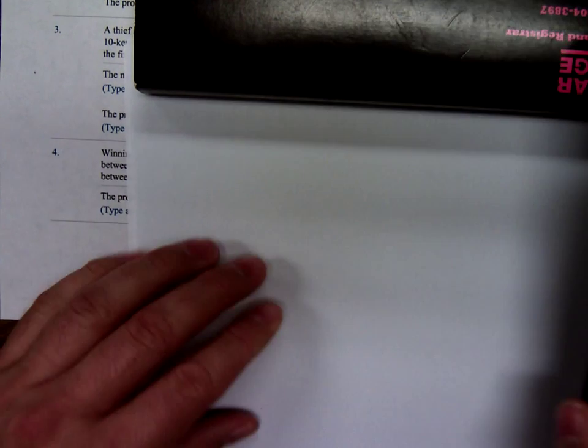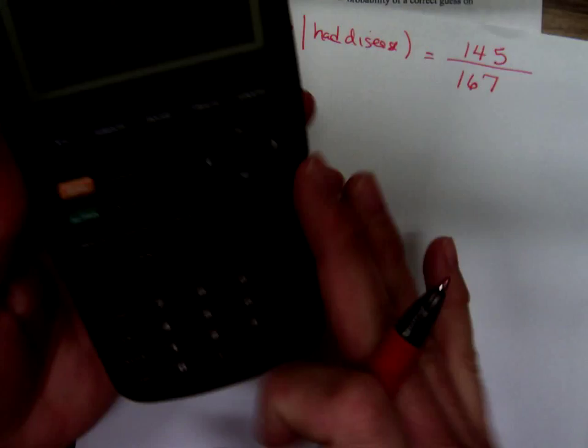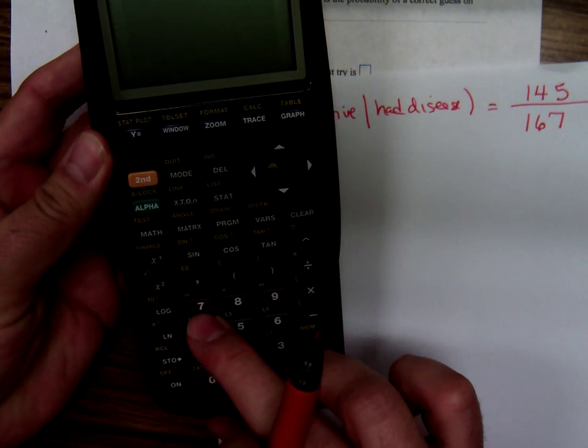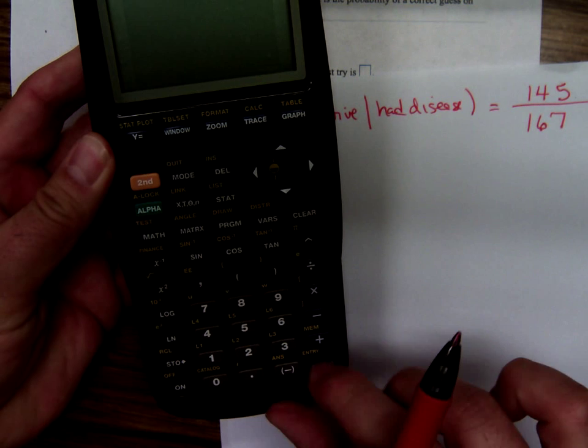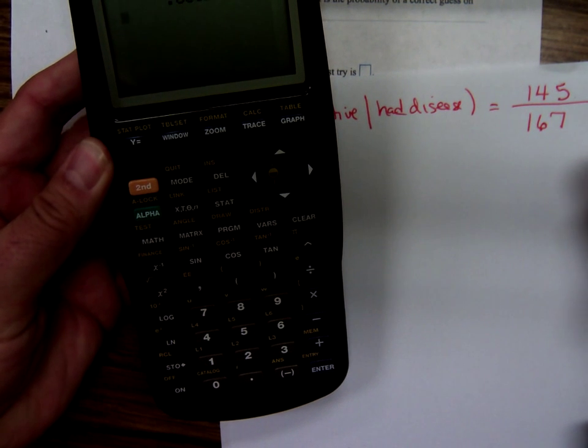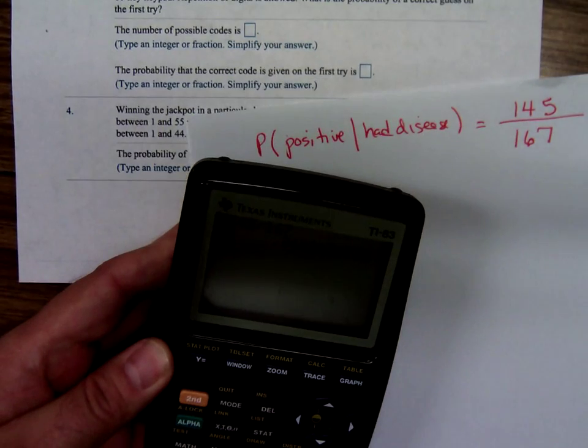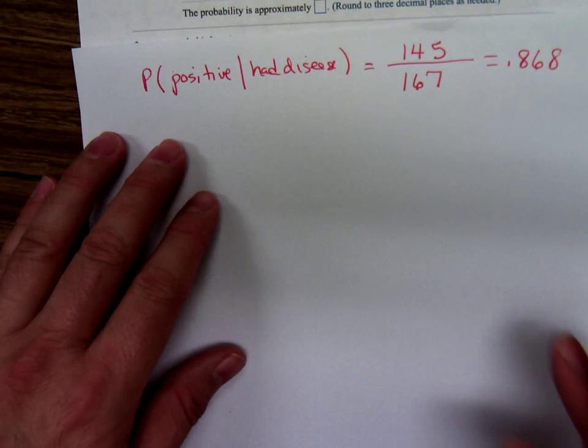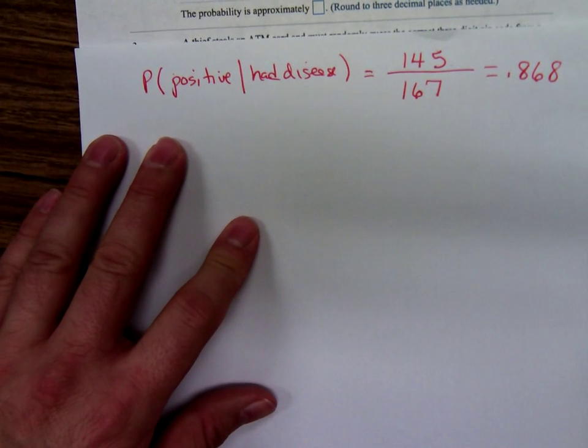Well, if we punch in 145 divided by 167, we get 0.868. Notice I rounded it to 3 decimal places. Okay.